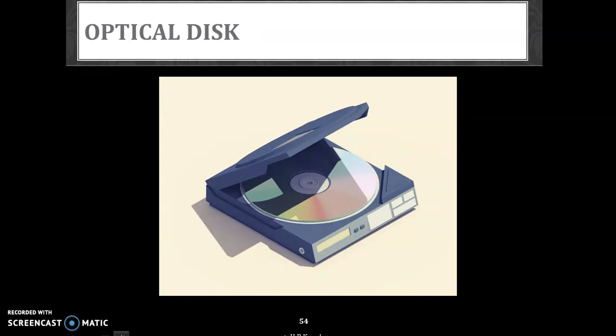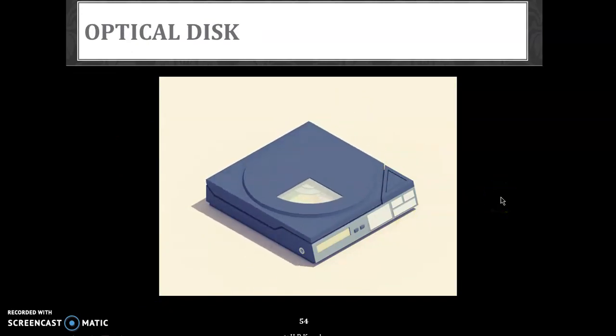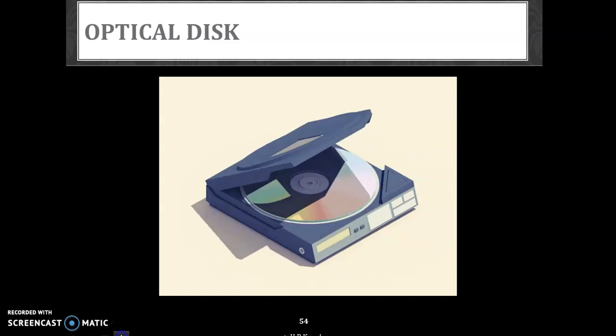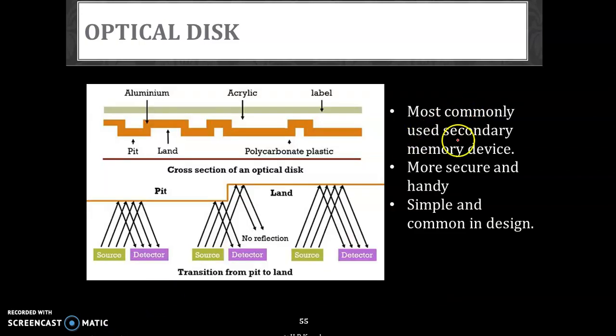Next we will speak about optical disk. This optical disk you have seen. Most of the people use it for storing some software. It is actually quite secure. We have got a lot of advantages with respect to this optical disk. They are the most commonly used secondary memory devices. They are quite easy and more secure and handy to use, and they are quite simple in terms of their design. Let's see about its operation. This is how the disk is made up of. We have got like three layers - aluminum layer and acrylic we have. Over the label if it is, we will place it. And then we have got a polycarbonate plastic. This aluminum and acrylic combination will help the disk to remember the connectivity, how it is to be done.